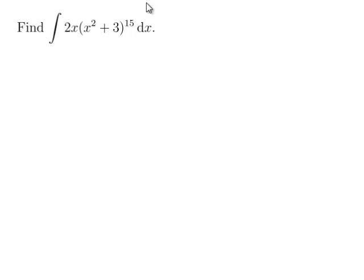So the next thing on the list to try would be substitution. In substitution I'm supposed to find the most annoying bit and make that u. So that would be the bit inside this 15 here, the x squared plus 3. So let u be equal to x squared plus 3.